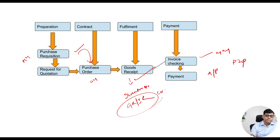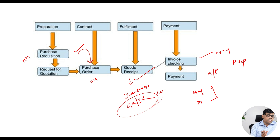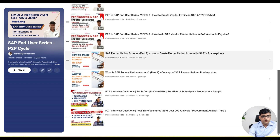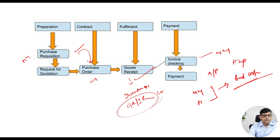This is another important business process with many jobs available on the P2P process from a user and consulting point of view. The required configuration includes MM configuration, FI configuration, and their integration — FIMM integration. Compared to FISD integration, this is more complex because it is also connected with product costing: once you purchase materials you convert them into finished stock. If you are preparing from a user point of view, I have already prepared a playlist you can practice from. For interviews, these configurations and integrations will be required — first understand the business process, then do the configuration, then master data upload, and then various types of testing.